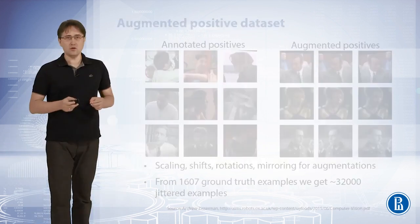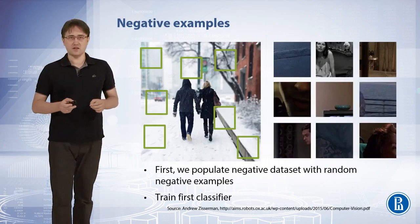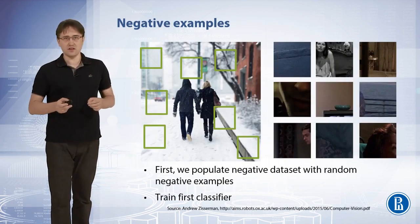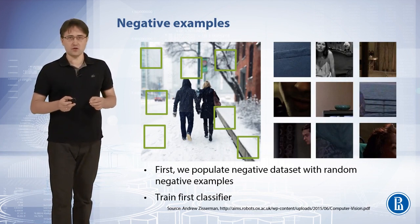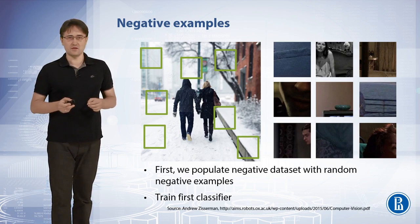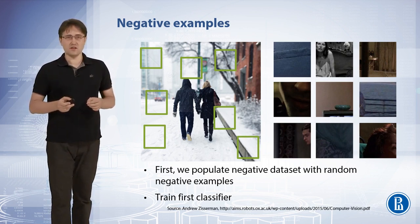The only way to populate the negative dataset initially is to use random negative examples. As seen in the slide, most of such examples should be very easy for the detector. We then train the first detector using the augmented positive data and these random negative examples.